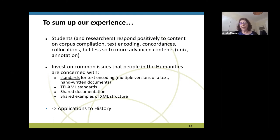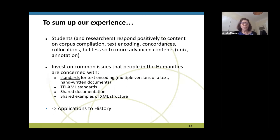For us it's language, but in fact we're all dealing with text or sound, and text is a common perspective. We all need standards for text encoding when we have multiple versions of a text or handwritten documents. We need standards for presenting this, and we need some shared documentation — documentation for one project that has been passed on and reused and adapted by several projects. We want shared examples of an XML structure; that's the first thing they wanted: examples of the XML we should be using and which components to integrate. These are the questions that everyone is facing right now, and I see immediate applications to history.